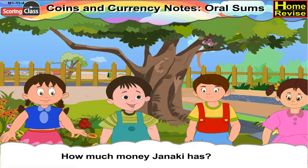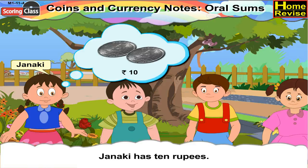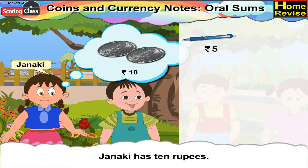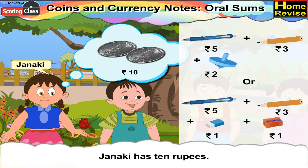Now let us see how much money Janki has. Janki has 10 Rupees. With 10 Rupees, Janki can buy either one ball which is 10 Rupees, or 1 pen plus 1 pencil plus 1 bhangari, or 1 pen plus 1 pencil plus 1 eraser plus 1 sharpener.